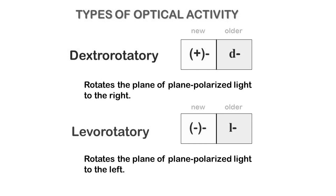The direction of rotation of plane polarized light is also important. If light rotates in a clockwise direction or to the right-hand side, the optical activity is termed dextrorotatory, and the substances are called dextrorotatory substances. If the rotation is to the left-hand side or anticlockwise, the substances are termed levorotatory. Dextrorotatory substances are denoted with a plus sign and levorotatory substances with a minus sign.